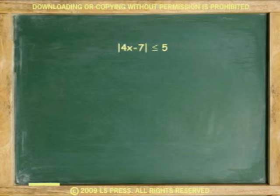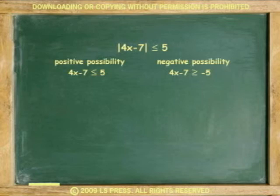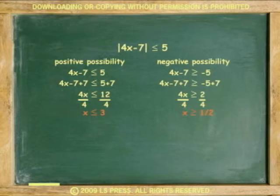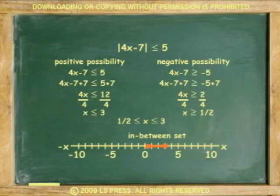Another example: absolute 4x minus 7 is less than or equal to 5. Write two possibilities — positive possibility and negative possibility. Add 7 to both sides, then divide by 4. We get two answers: x is less than or equal to 3, and x is greater than or equal to 1 half. The conjunction is then: 1 half is less than or equal to x, and x is less than or equal to 3. On a graph, it shows the in-between sets with solid circles for less than or equal.